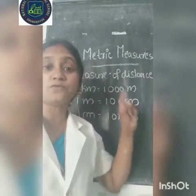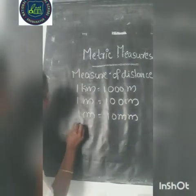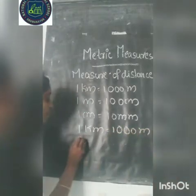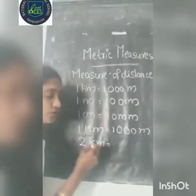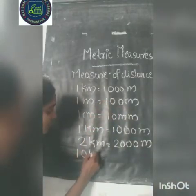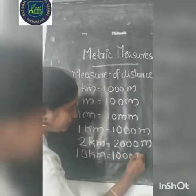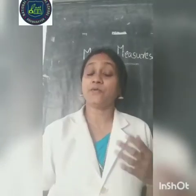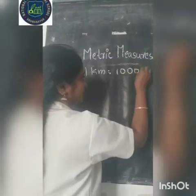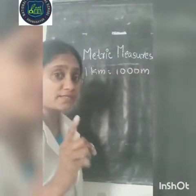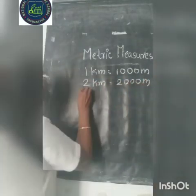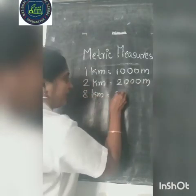Now we can do some problems using this. We know that 1 kilometer is equal to 1000 meter. Therefore, 2 kilometer is equal to 2000 meter. And 8 kilometer is equal to 8000 meter.